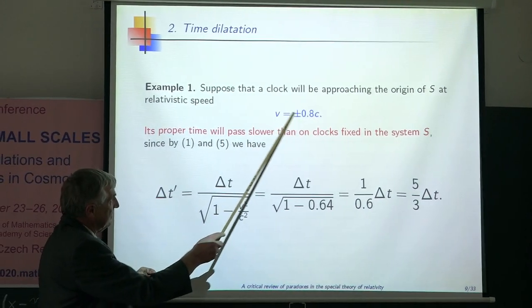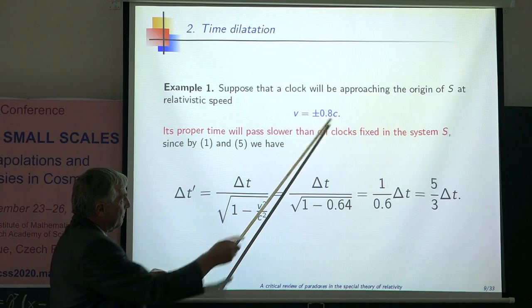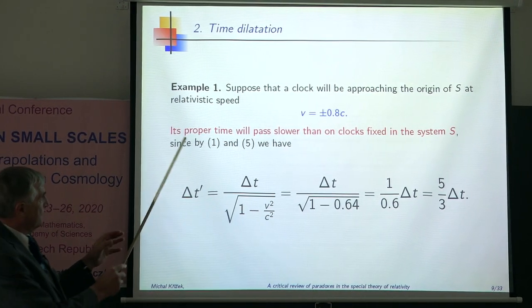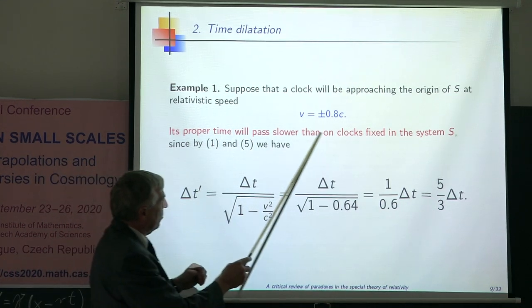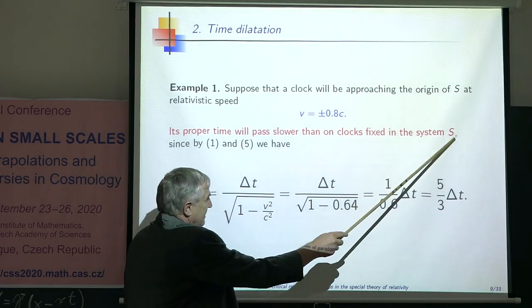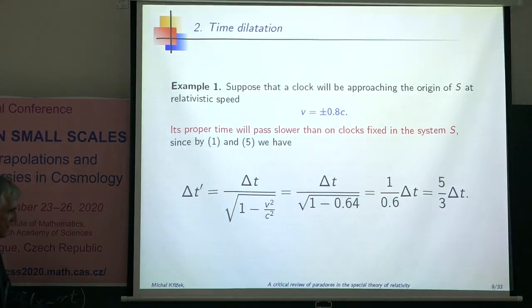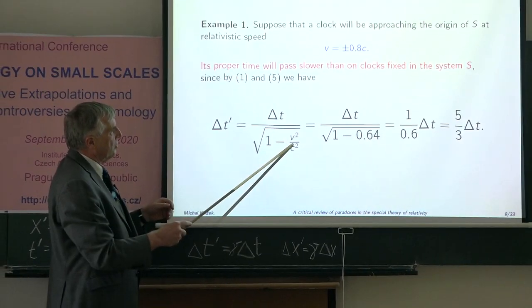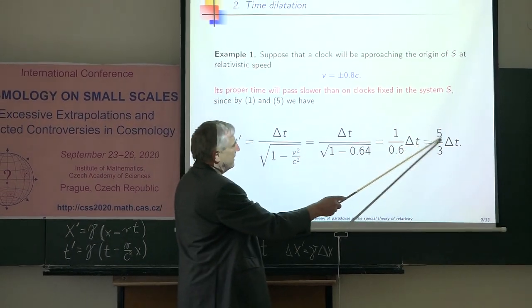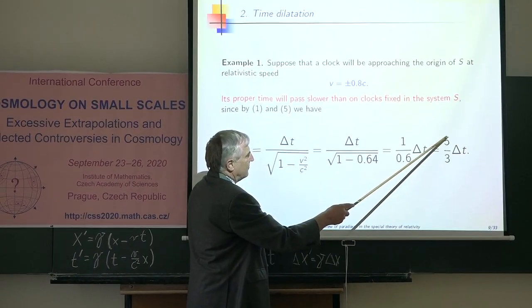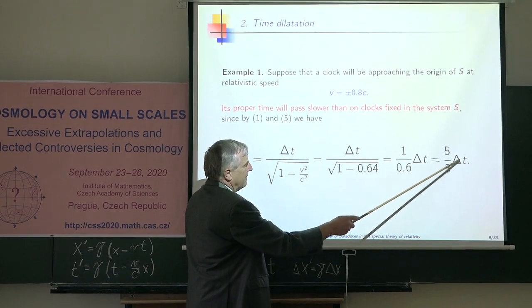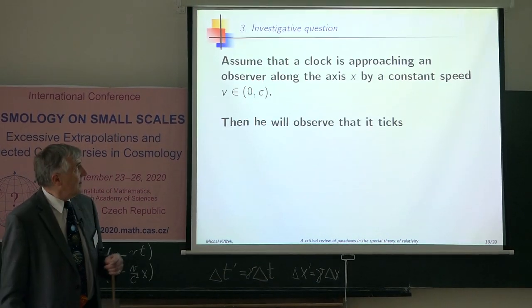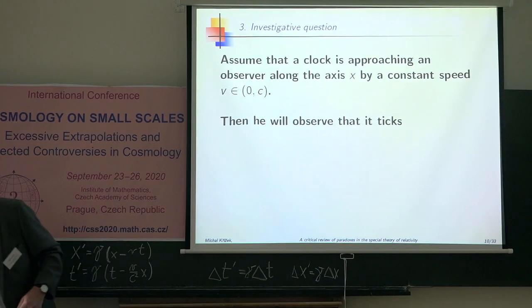I think that this experiment is not too credible since none of the corresponding three systems was inertial. None was inertial because the Earth rotates, and the relative error was 10 to the minus 15, so it is very difficult to check. Now I will present a very simple example. Let us consider the speed 80% of the speed of light. Its proper time will pass slower than on the clock fixed in system S due to this formula.